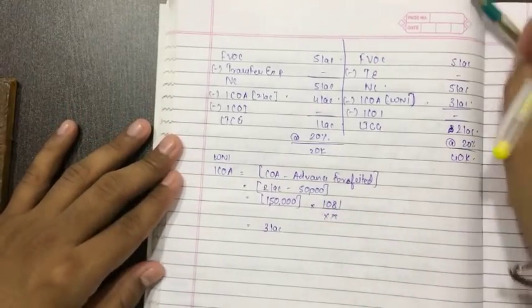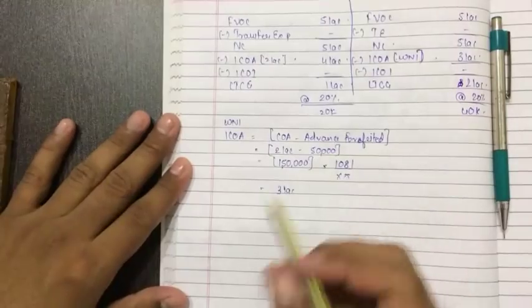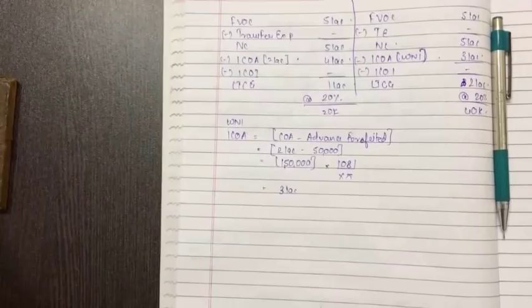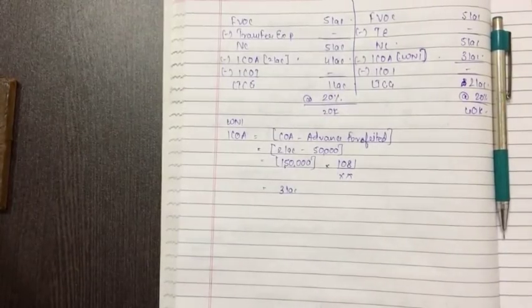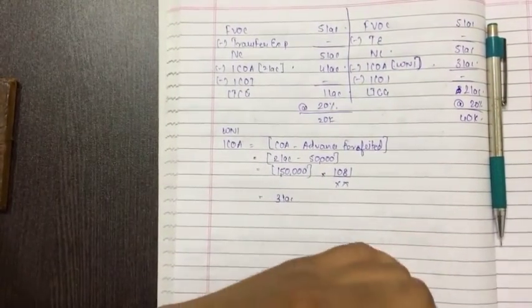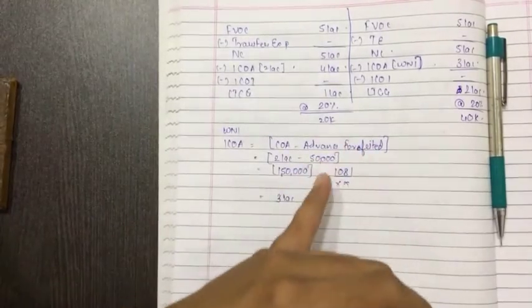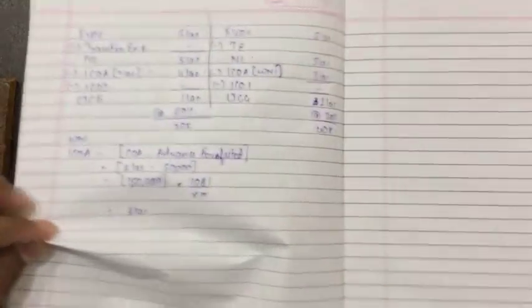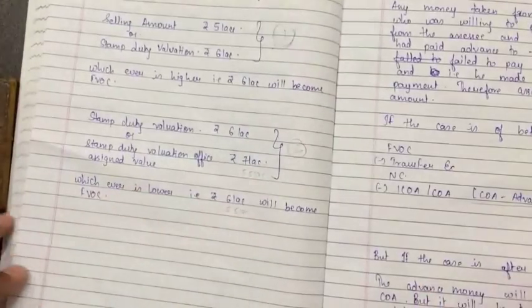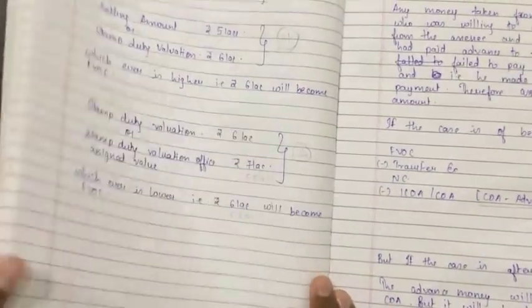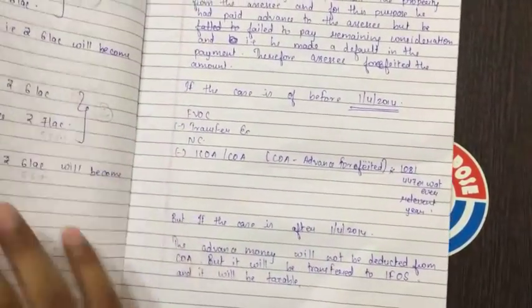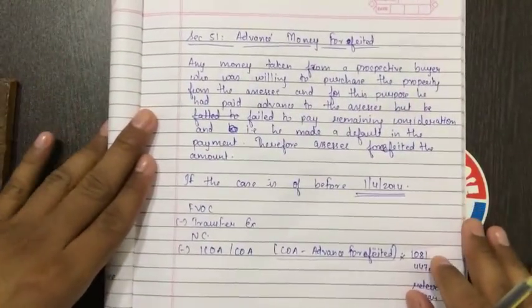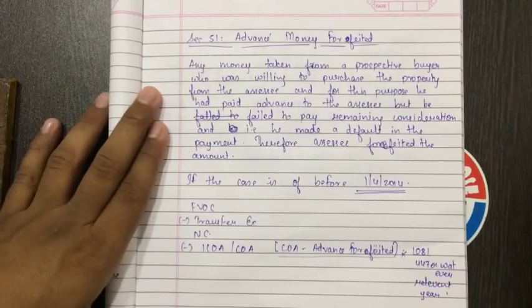For just taking this advance, this effect was a bad effect, so the government or the finance ministry has made the section 51 amendment and they have told that the advance money whichever is forfeited will be transferred to income from other sources and not reduced from the cost of acquisition. This is the effect but after 1-4-2014 you have to simply transfer it to income from other sources because it is convenient and very economic to do. I hope you have not copied anything right now, so I'm giving you the time to copy.